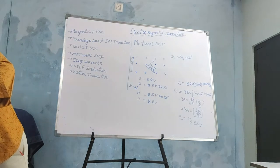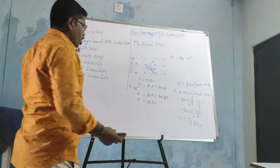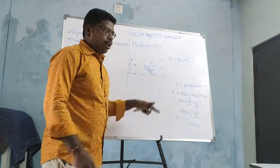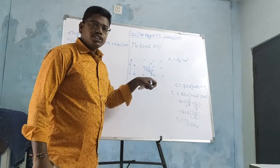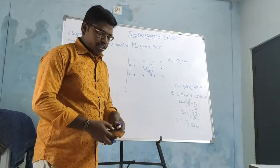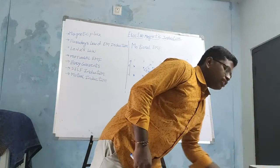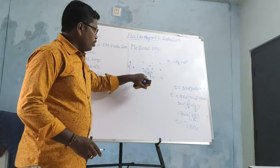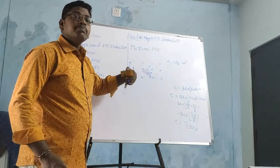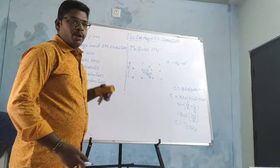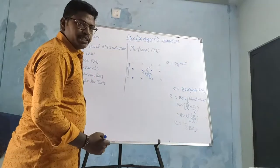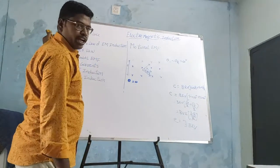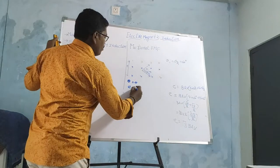Up to here we said that when the conductor is moving with velocity perpendicular to the magnetic field, the induced EMF is BLV. If for example the velocity of the conductor is parallel to the magnetic field, then the angle between these two is 0 degrees, and the induced EMF is...